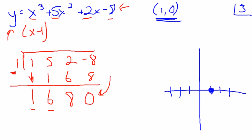Remember, that tells me that my remainder is equal to 0. So it's good because that tells me that x minus 1 is an actual factor, this thing. The 1, 6, 8 corresponds with x squared plus 6x plus 8.